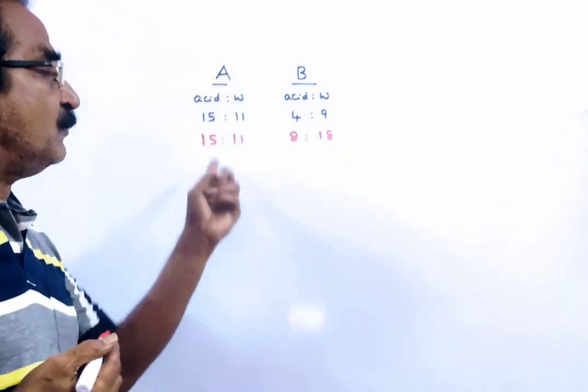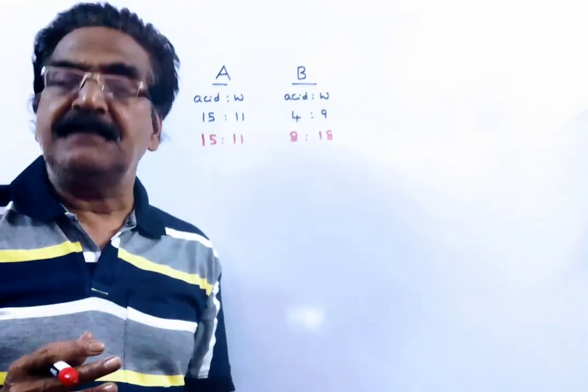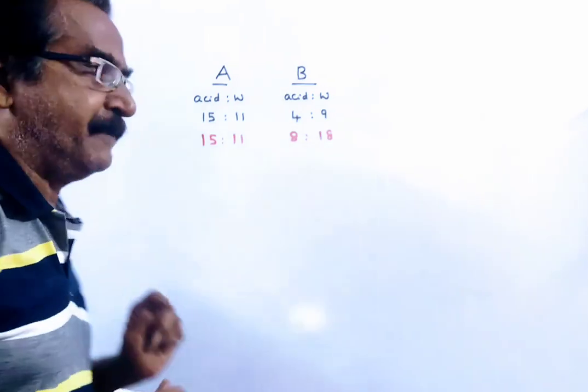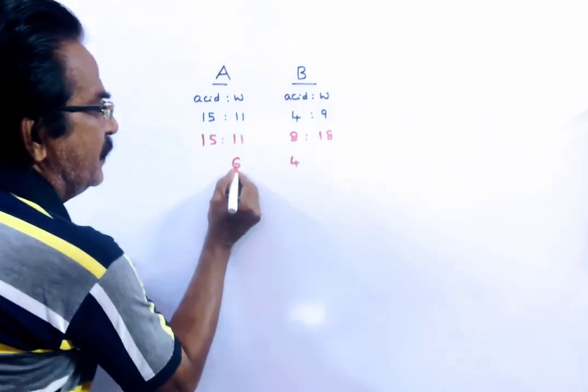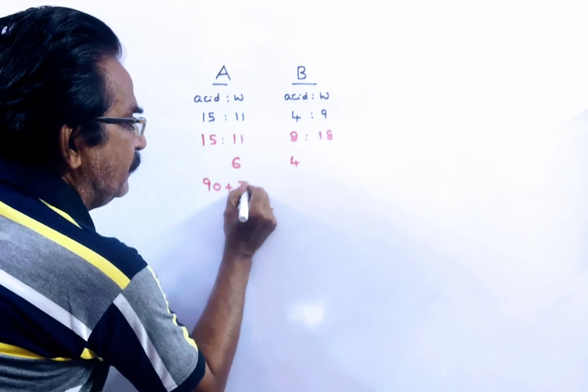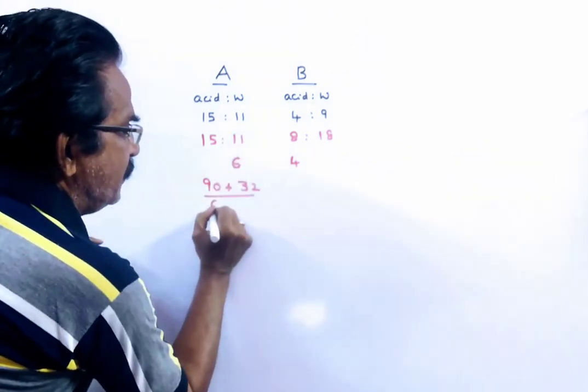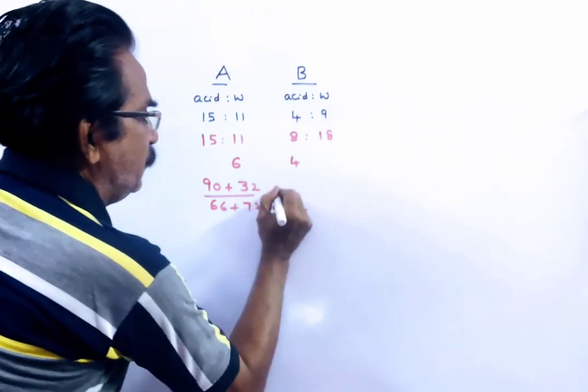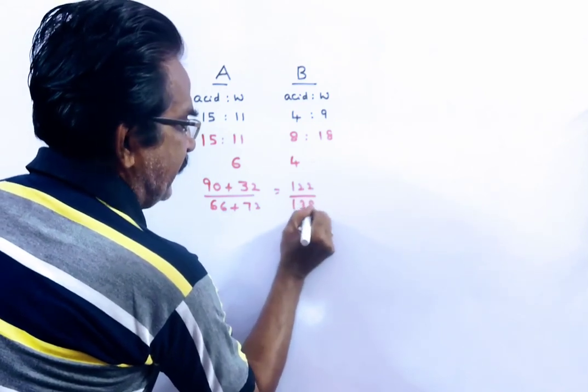After that, 6 litres of solution A and 4 litres of solution B are mixed. So what is the ratio of acid and water in the resultant mixture? Here, this is taken 6 litres, this is taken 4 litres. So 6 into 15 is 90 plus 4 into 8 is 32. 6 into 11 is 66 plus 4 into 18 is 72. This is equal to 122 by 138.